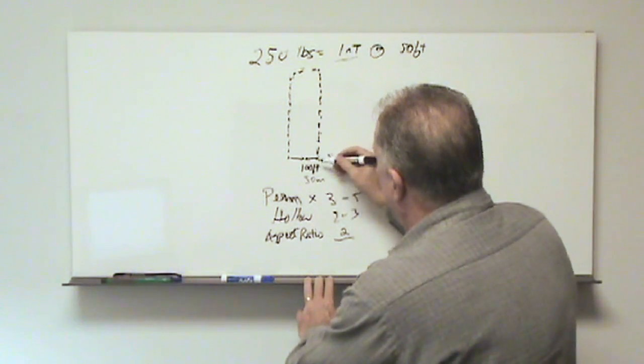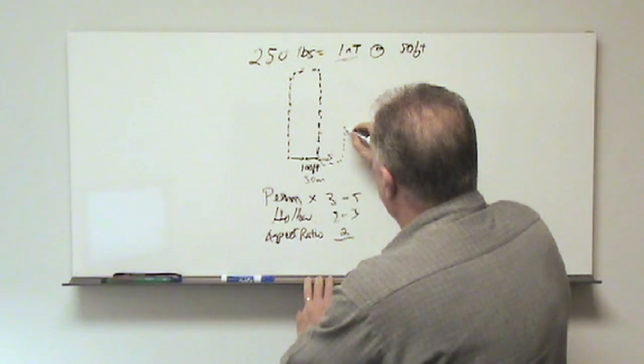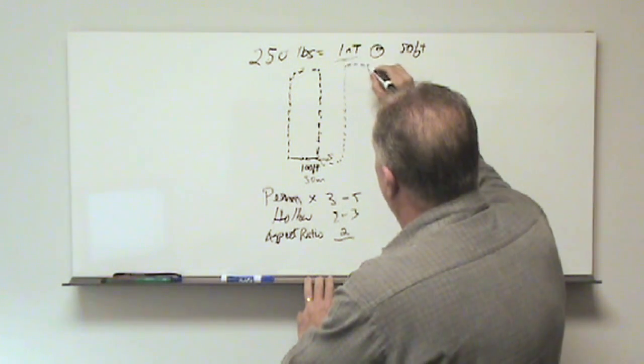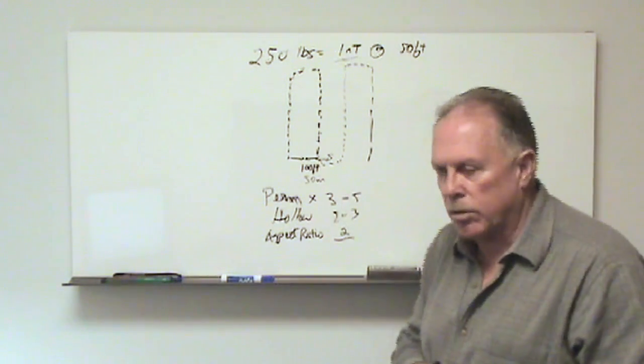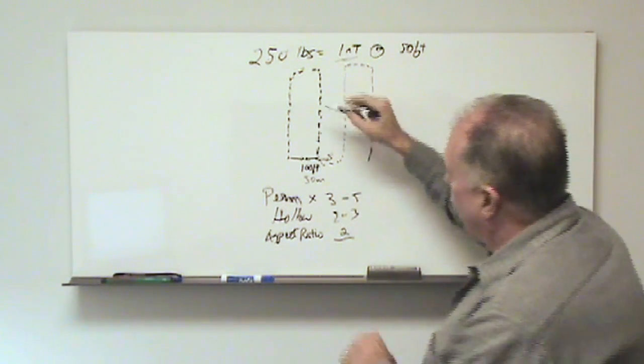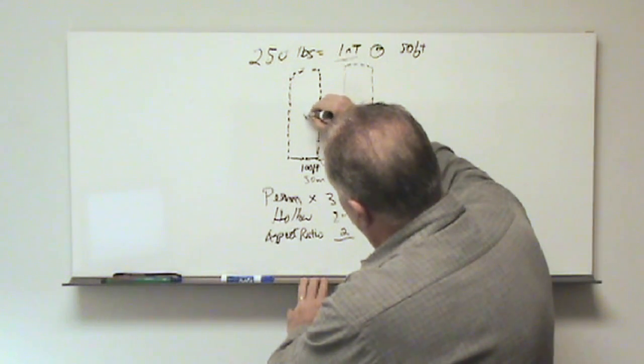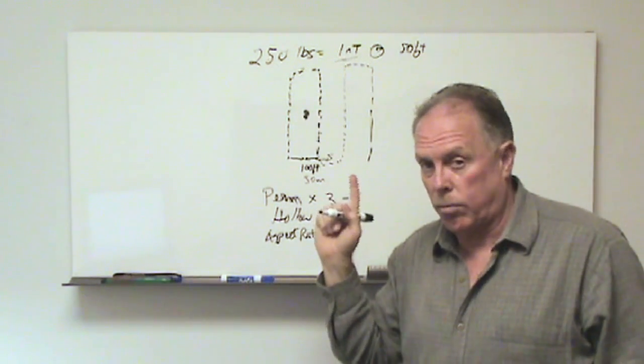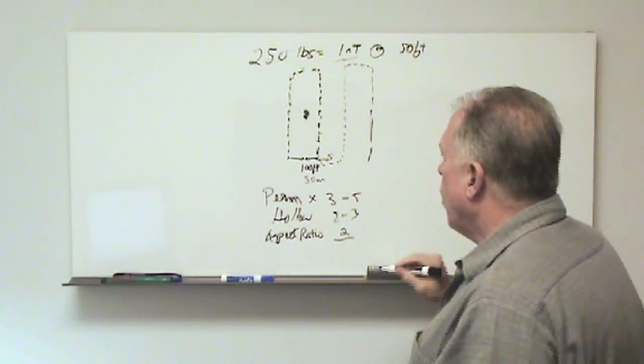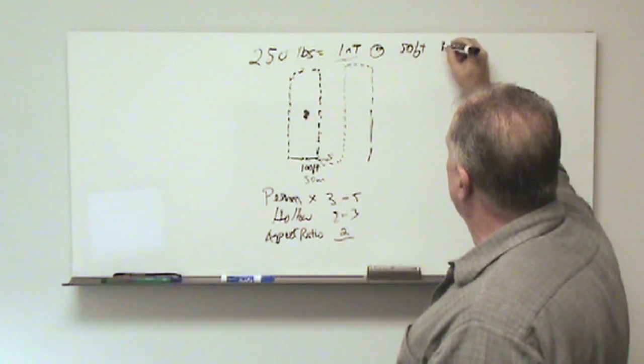So that means that we can in fact design our survey with 100 foot line spacings. The anomaly that we would expect to get from an object of 250 pounds or 100 kg out in the middle of the survey grid would be one nanotesla based on induced only.